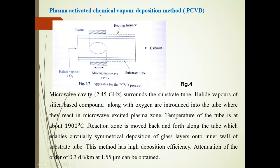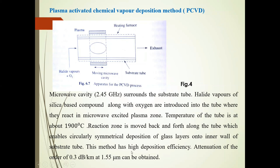Next is the Plasma Activated Chemical Vapor Deposition (PCVD) method. Halide vapors plus O2 enter a plasma zone, with a heating furnace and exhaust. A moving microwave cavity surrounds the substrate tube. The microwave cavity operates at 2.45 GHz and surrounds the substrate tube. Halide vapors of silica-based compound along with oxygen are introduced into the tube, and they react in the microwave-excited plasma zone. The temperature of the tube is at 1900 degrees Celsius. The reaction zone is moved back and forth along the tube, enabling circularly symmetrical deposition of glass layers onto the inner wall of the tube. This method has high deposition efficiency, and attenuation of the order of 0.3 dB per kilometer at 1.55 micrometer can be obtained.